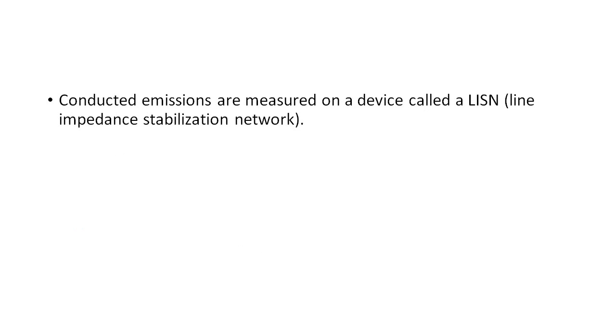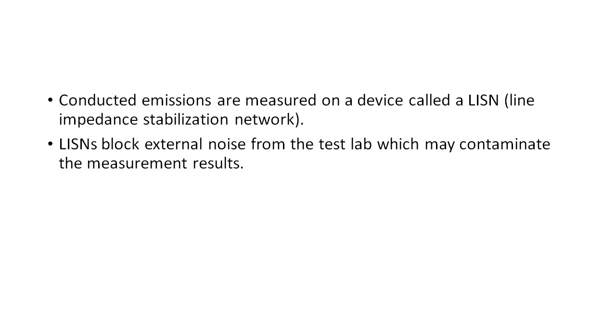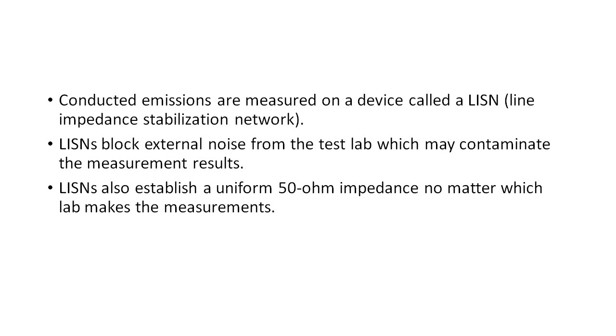The LISN serves two purposes. The first is to prevent external noise from the test lab from contaminating the readings of the digital device under test to prevent false readings. The second is to ensure repeatability no matter which test lab the device is measured at. The impedance of a power grid is different and unpredictable at every location, so the LISN provides a constant 50 ohm impedance between phase and green wire, or ground, and between neutral and green wire.